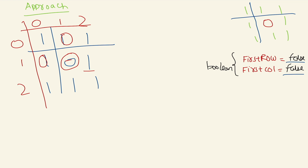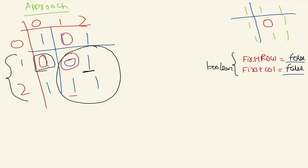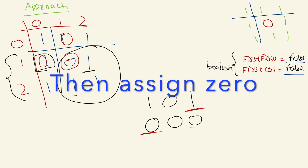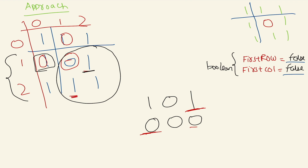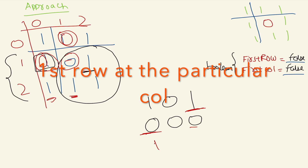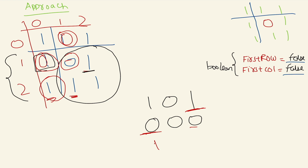So the first row entry becomes 0 and the first column entry becomes 0 at that position. We then continue iterating — if the value is 1, we do not convert its row and column. After the first pass, we iterate again through the matrix (from index 1,1 onwards) and check: if the current cell is 1 and its corresponding first-row or first-column value is 0, we convert it to 0. Currently we have 0s in the first row/column, so we convert this value to 0 because those markers are set.